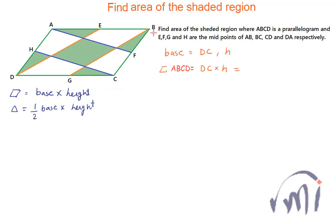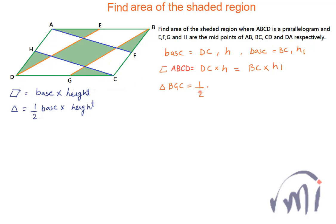Taking BC as base with height H1, we have DC × H = BC × H1. Now for the area of triangle BGC: the base is GC which equals half of DC, so DC/2, multiplied by height H — the perpendicular from point B to DC. This gives DC × H / 4, meaning triangle BGC has area equal to one-fourth of the parallelogram.